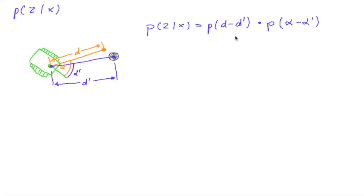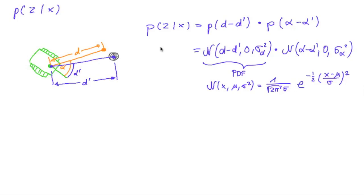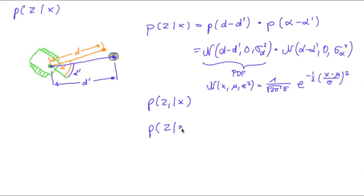We model those by normal distributions, using the Gaussian probability density function for both of these probabilities. We will have to do this for every landmark. Since we have six landmarks in our arena, we may have up to six probabilities for landmark measurements. These formulas compute the probability of one landmark measurement, and we assume independence of the probabilities of those landmark measurements, so our probability of all measurements given the current pose is just a product of the single probabilities.